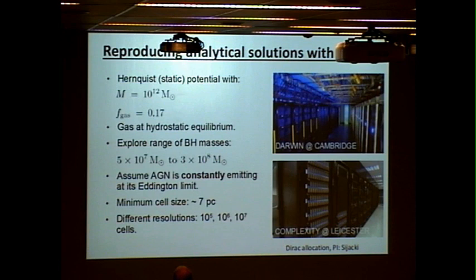This range encompasses the value at which you actually get an unbound shell, as I'll show later. We assume the AGN to be constantly emitting at the Eddington limit. This is unrealistic, but it's what analytical models assume quite often, so in order to mimic these, we make this assumption as well.